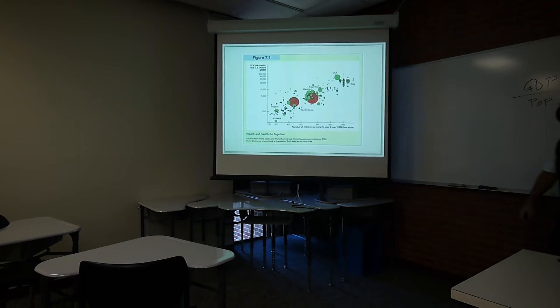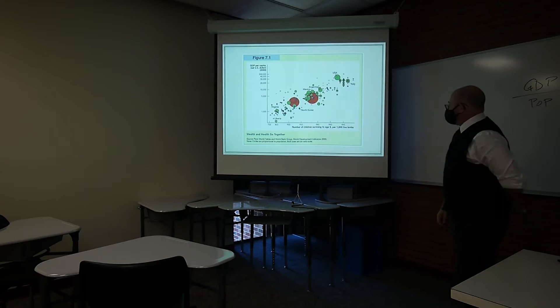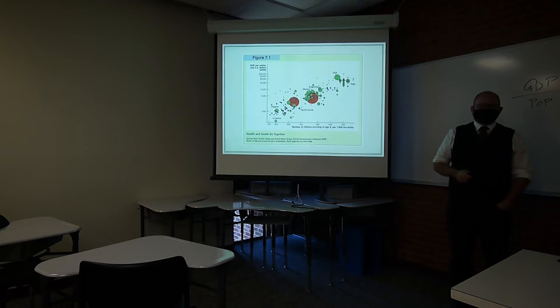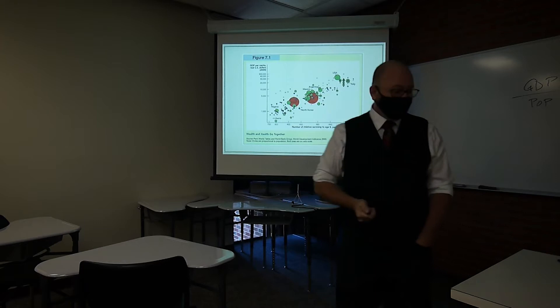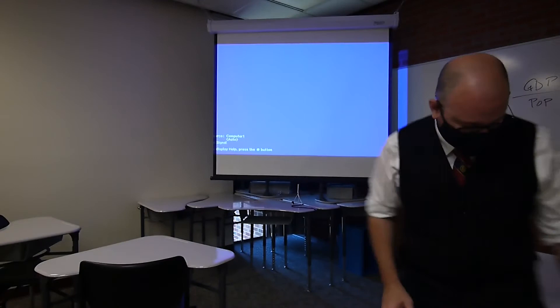The book also has a nice graph with wealth on one axis as measured by GDP, and health on the other axis measured by the percentage of children surviving to age five per thousand live births. One of the things is GDP does tend to go with other things that we care about. We're going to zoom in on that with a Hans Rosling visualization.